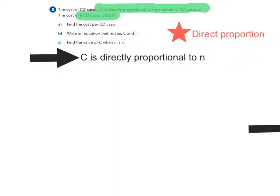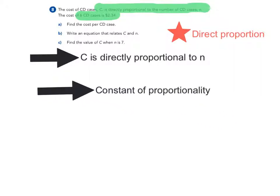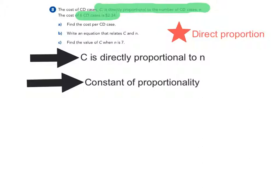Because we know this is a direct proportion relationship, we want to find the constant of proportionality, which also happens to be, in this situation, the cost per CD case.